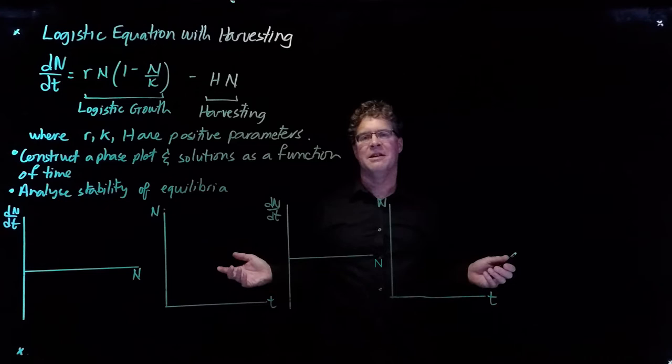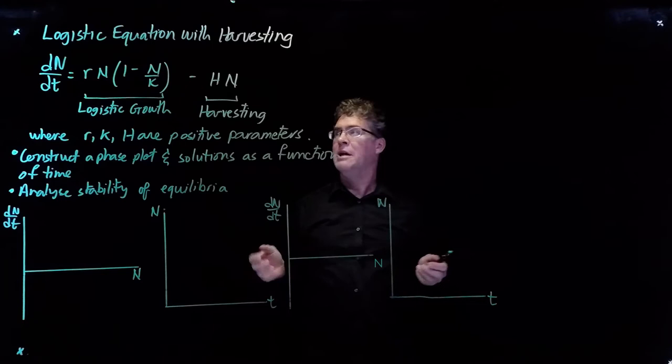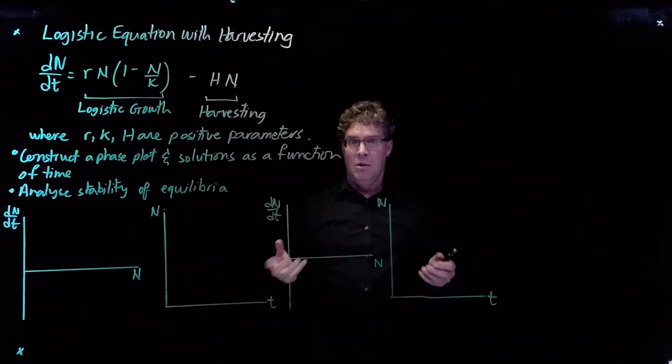I want to talk about the logistic equation with harvesting. We've seen the logistic growth equation before — it's shown right here. It has two parameters: r, a positive parameter which is the intrinsic growth rate, and K, a positive parameter which is the carrying capacity.